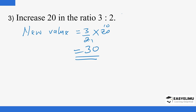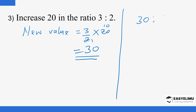That's simple. The new value is 30 and the old value is 20. Both are divisible by 10, so the ratio is 3 is to 2. You can see with increasing ratios the first value is greater — it's the reverse of what you'd expect to see with a decreasing ratio.